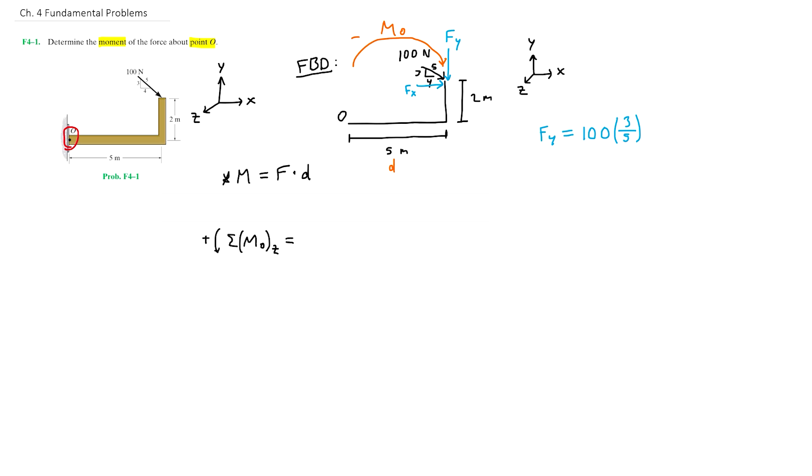Since I chose counterclockwise as my positive direction, this will simply be negative the force 100 times three-fifths, which is in newtons, times the distance d, 5 meters.